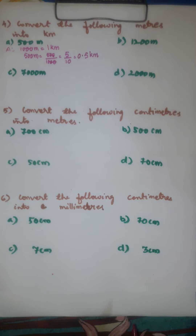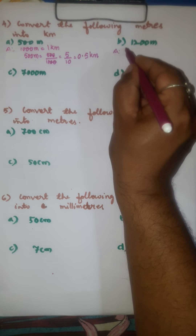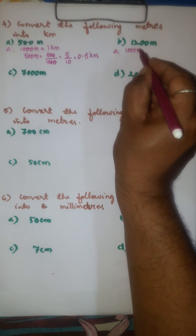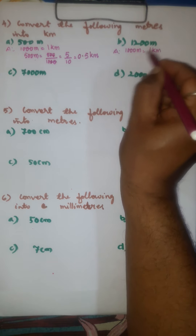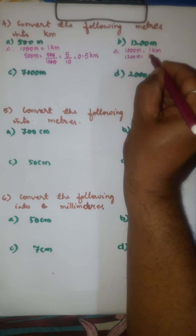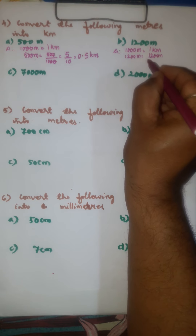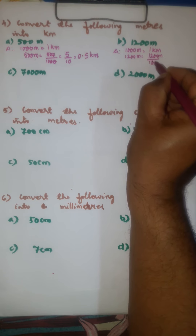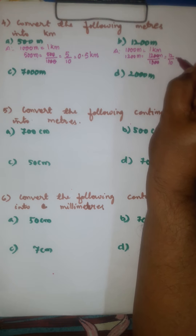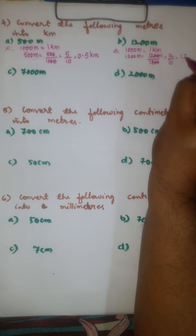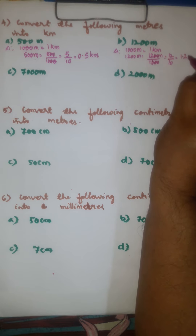Here again, 1000 meters is equal to 1 kilometer. Therefore, 1200 meters is equal to 1200 meters divided by 1000. After cancellation we get 12 over 10. In the numerator write 12; after 1 there is one 0, so count 1 place from right to left and put the decimal point. The answer is 1.2 kilometers.